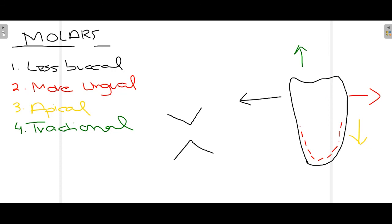The same principles for the first molar apply when extracting the mandibular second molar. For the mandibular third molar, anatomy varies considerably. If erupted in the oral cavity, closed extraction can be used. In most cases, however, the tooth is impacted with very divergent anatomy that does not allow closed extraction, so open extraction with flap raising is typically performed.